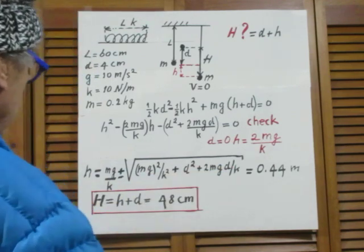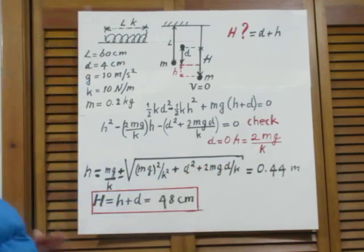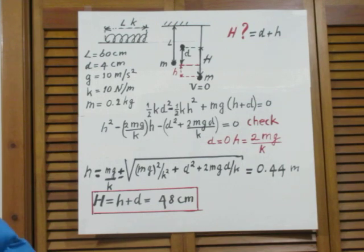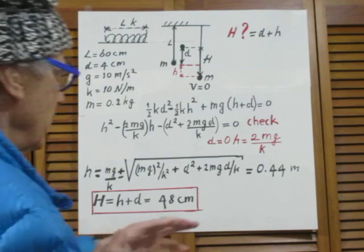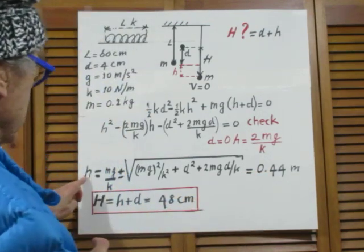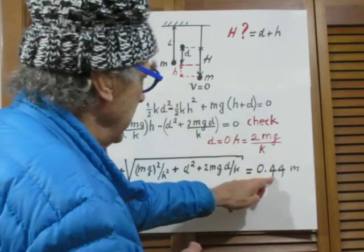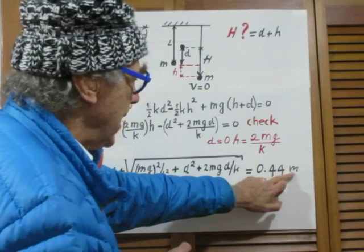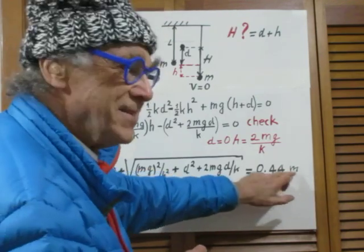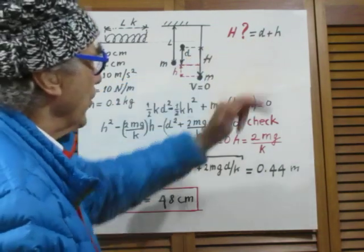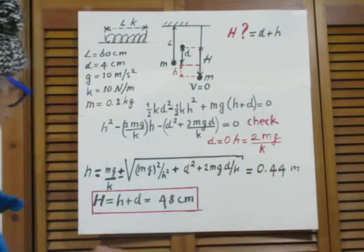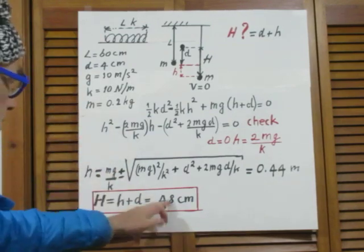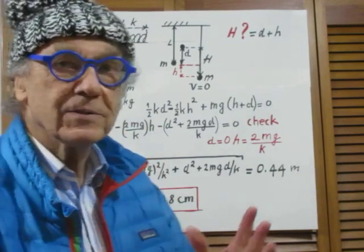So, I massage this a little further. I solve it here. I put in the numerical values and I find that h, my little h, is 0.44 meters. This m is not mass now. This m is meters. Since we want to know what capital H is, it is the 44 centimeters plus the 4 centimeters, 48 centimeters.